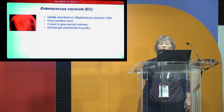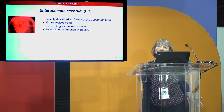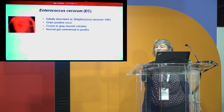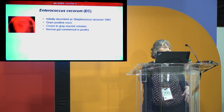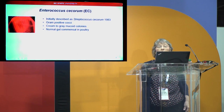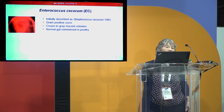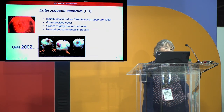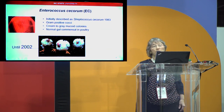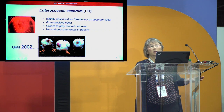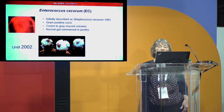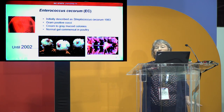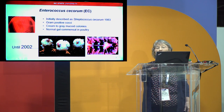Enterococcus cecorum was initially described as a streptococcus in 1983. They're gram-positive cocci, and they grow cream-to-gray-colored mucoid colonies on blood agar. They're a normal gut commensal in poultry, and in fact there are reports that they can become the most common gut commensal in chickens by five weeks.